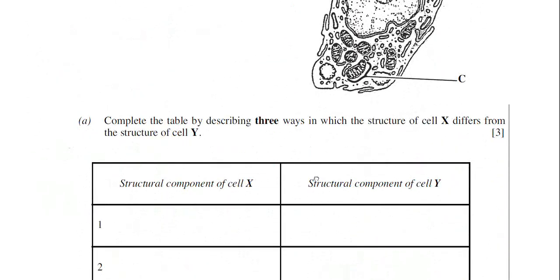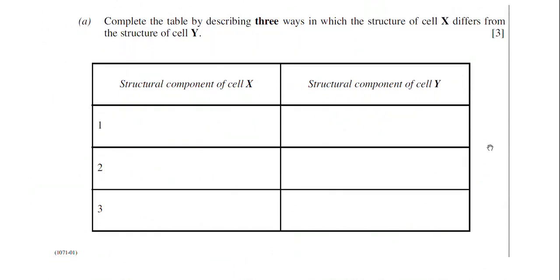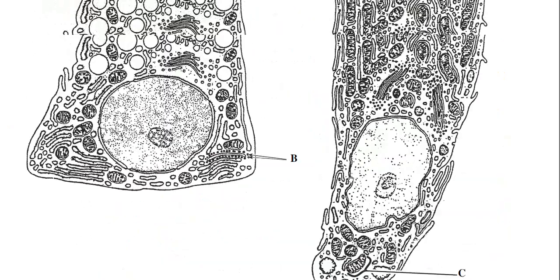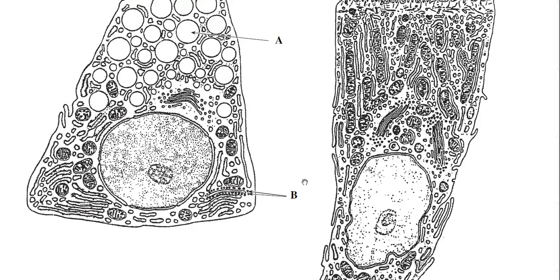Let's move on to part A then. We have a table here. You're asked to complete the table by inserting three ways in which the structure of cell X differs from the structure of cell Y. This is only worth three marks here, you've got a mark for each row. So that suggests to me you need statements that make a direct comparison there. You have to link your statements. So for this you really have to look closely at these cells and you have to be able to identify the organelles present in the cell.